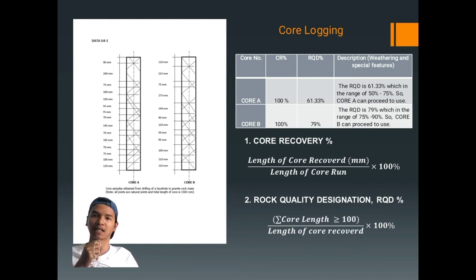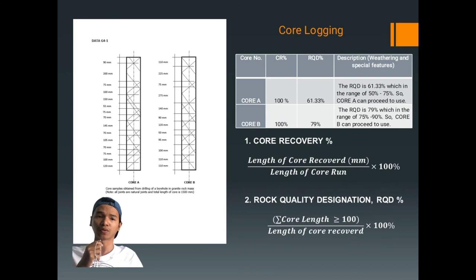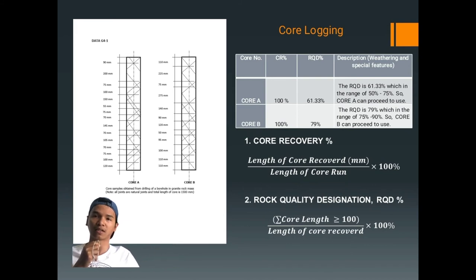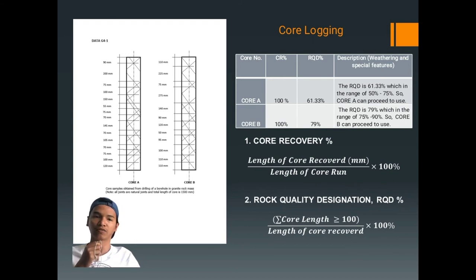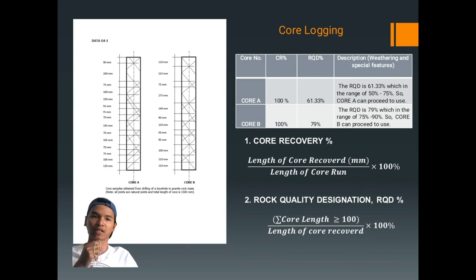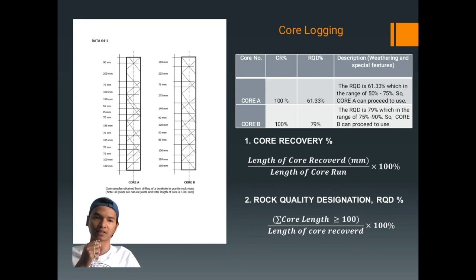The second calculation is Rock Quality Designation, or RQD. To find the RQD percent, the core length must be 100mm and above, considering only natural voids. From the data provided by the lecturer, all data were natural voids. The natural void pieces over 100mm are divided by the total length of core recovered, then multiplied by 100%. For Core A, we get 61.33%, and for Core B, we get 79%. The full calculation is included in the report.